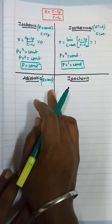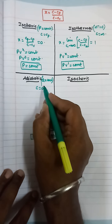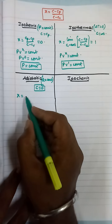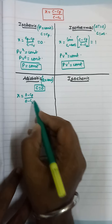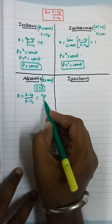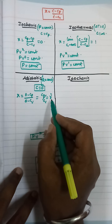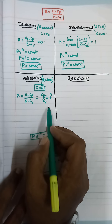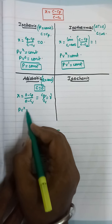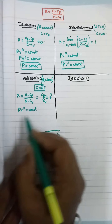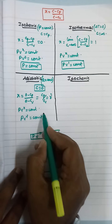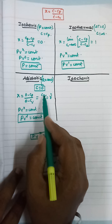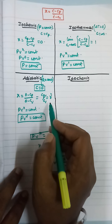For the adiabatic process, no heat is exchanged, so the molar specific heat C is considered as 0. Substituting, X equals (0 minus CP) by (0 minus CV), which becomes CP by CV. This is nothing but the adiabatic exponent gamma, which is the ratio of molar specific heat at constant pressure to constant volume. By the polytropic relation, PV power gamma equals constant, where gamma equals CP by CV and varies for different gases.